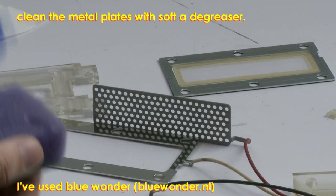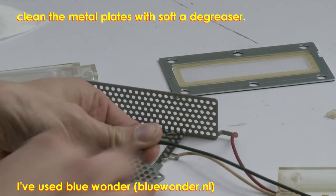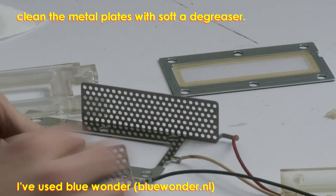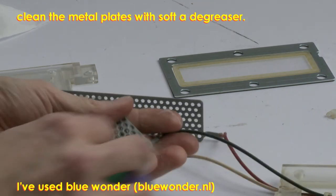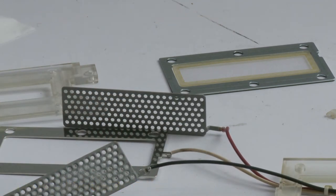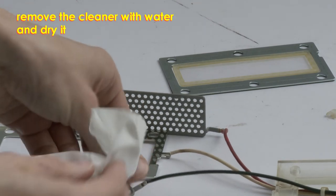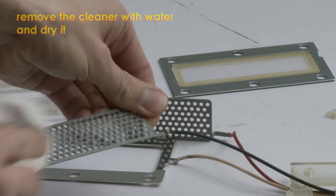Now clean the metal plates and the metal plate with the plastic film with a degreaser. After the degreaser, use water to clean them properly and dry them.